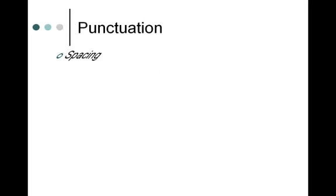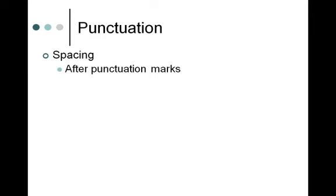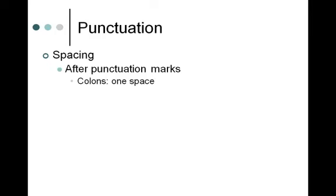Looking at punctuation in terms of spacing: as a general rule, after punctuation marks, use a single space. So after a period, a comma, a semicolon, and even after a colon — one space. Many of you may have been taught that after a colon you space twice. That may be for other styles, but not for APA style.